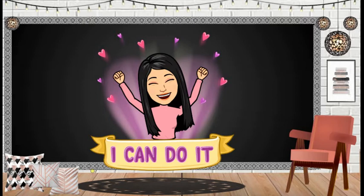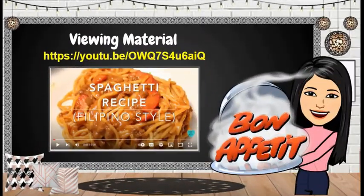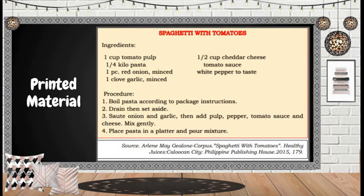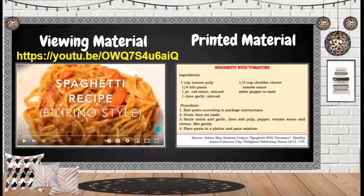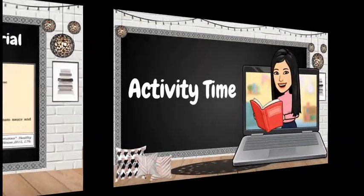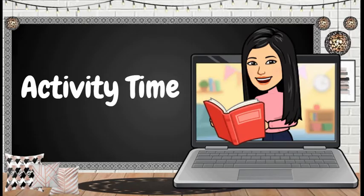Now that you know the similarities and differences between viewing materials and printed materials, I am sure you can compare and contrast their contents. For your practice, here is a YouTube link of a video tutorial on how to cook Filipino style spaghetti. And here is a recipe of spaghetti from a cookbook. Watch the video tutorial, read and analyze the content of the spaghetti recipe from a cookbook. Compare and contrast the contents of the online material you have just viewed to the print material presented. You may use a Venn diagram for your answers. You may pause this video lesson and come back if you are done.